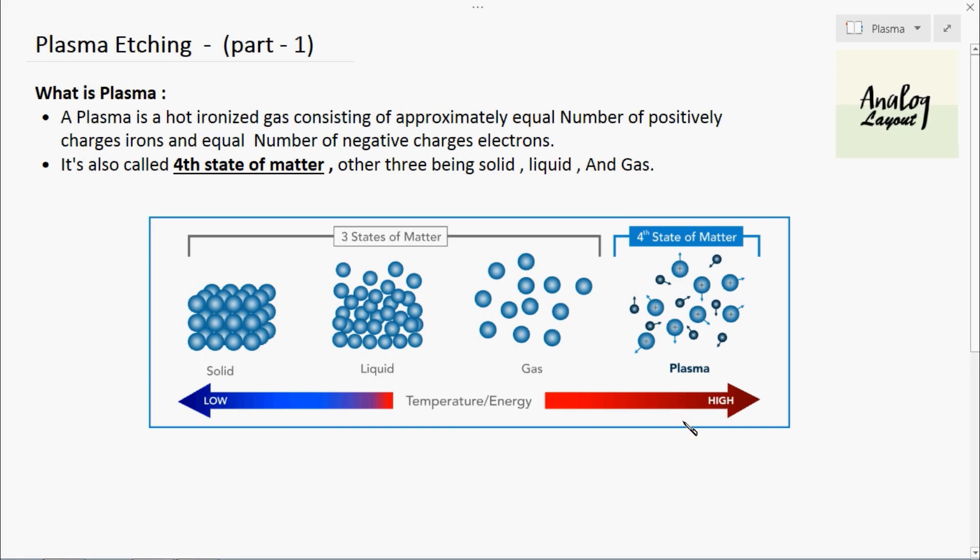Whenever sufficient energy or temperature is applied to any kind of liquid, we can convert that liquid to plasma form. Selectively they are using some liquids to convert for plasma etching process, and now we are going to discuss all those things based on a small video.